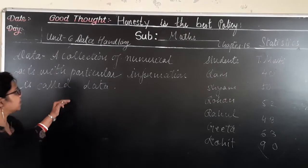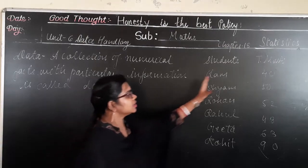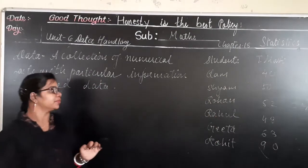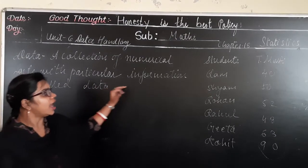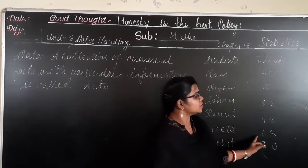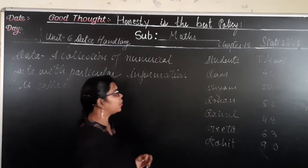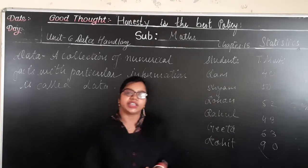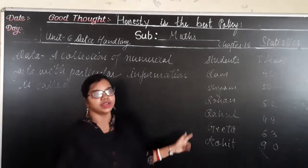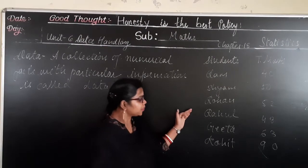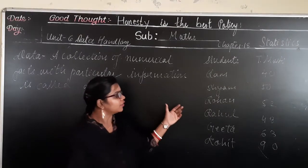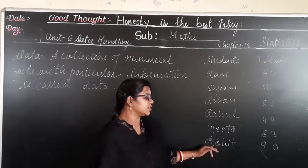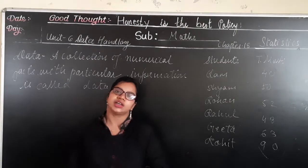So data is a collection of numerical facts with particular information — that means this particular student has scored this many marks in that particular exam or subject. The numerical entries are also called observations. With the help of this data, suppose it asks how much marks Rahul scored in the mathematics subject — Rahul scored 48 marks. And who scored the highest marks? The highest marks is 90, scored by Rohit. With the help of particular information in the data, we can answer the questions given in statistics.